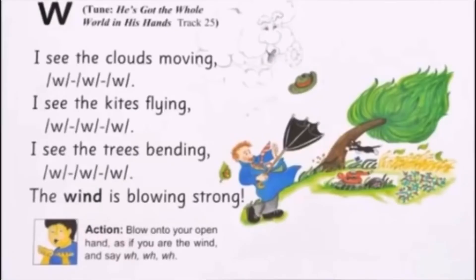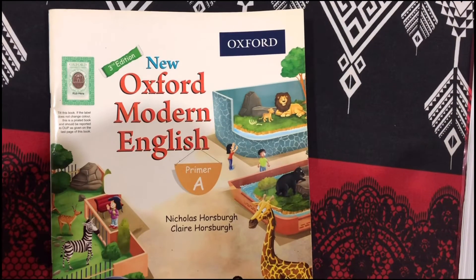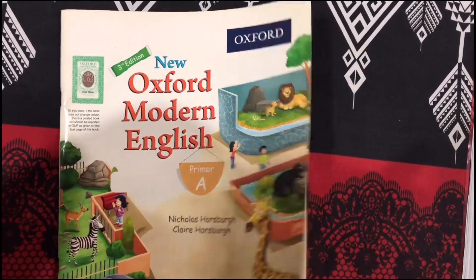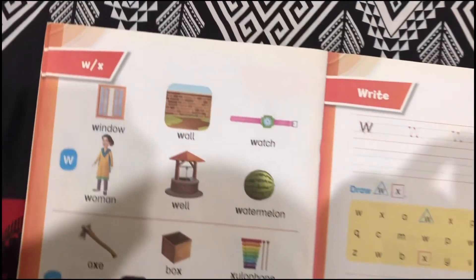The clouds are moving, wah wah wah. I see the kites flying, wah wah wah. I see the trees bending, wah wah wah. The wind is blowing strong. My dear students, New Oxford Modern English, your textbook page number 34, and we will revise the same we have done previous.